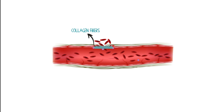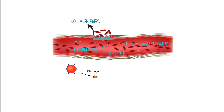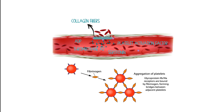Platelets adhere to the exposed collagen fibers and this changes their shape. These misshapen platelets release platelet granules containing chemical mediators like ADP, thromboxane A2, serotonin, and platelet activation factor. Those will activate and attract other platelets. To attach platelets to each other, GP2B3A receptors are activated. Fibrinogen binds to these receptors on two separate platelets, resulting in platelet crosslinking.